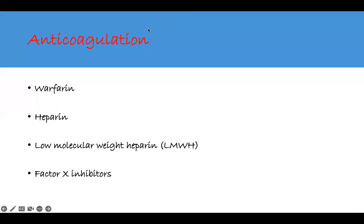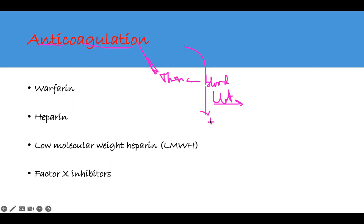Anticoagulation means we're trying to make our blood very thin. There's something wrong that requires us to make our blood very thin - we don't want it to clot. There are numerous coagulation factors, starting from one all the way to about 12, and there are many medications that can affect those pathways. For example, warfarin is actually a rat poison - that's why it's very dangerous. These medications are designed to prevent you from forming clots.